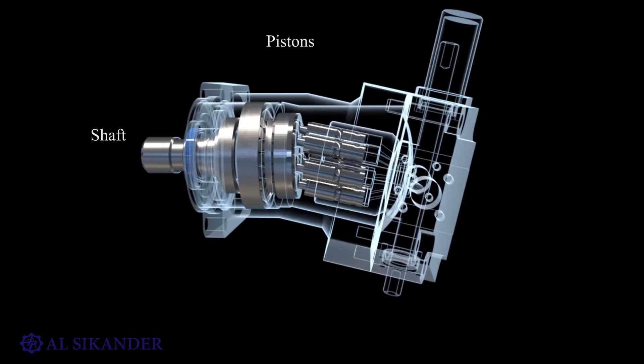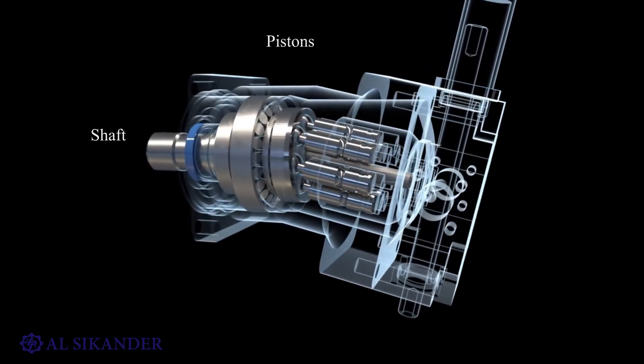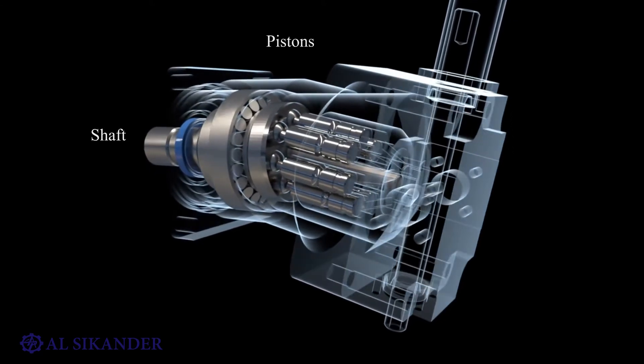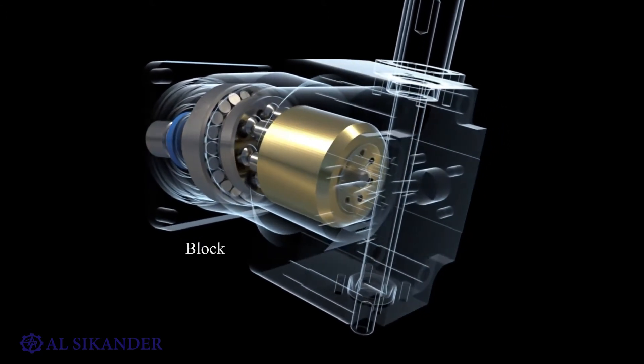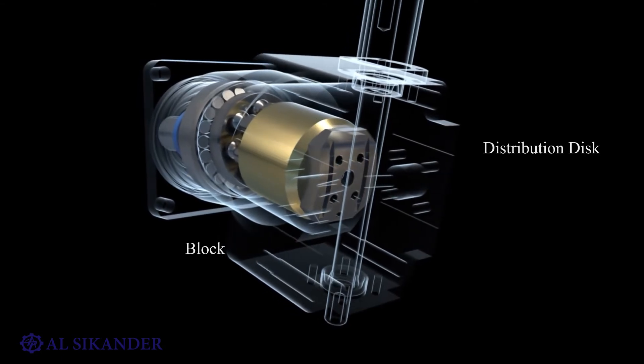In the pump shown, the rotation from the drive shaft to the block is transmitted through the pistons. There are designs that utilize a power gimbal for this purpose. The block rests on a distributor disc having a spherical surface. In the disc, there are channels for the supply and discharge of fluid to the block with pistons.